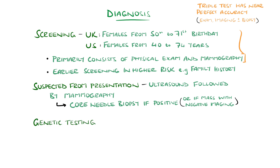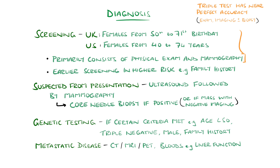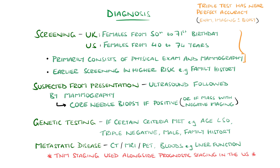Genetic testing is then dependent on criteria according to the National Comprehensive Cancer Network, though some experts have recommended all cases be genetically tested. Example criteria include age under 50, triple negative breast cancer, male sex, and family history. Further imaging including CT, MRI, or PET can be done if there is suspicion of metastatic disease, as well as blood tests featuring a complete blood count and liver function tests. Grading is based on the histological exam, and staging follows the anatomic TNM staging model, though prognostic staging — which includes biomarker status — is also particularly used in the United States.